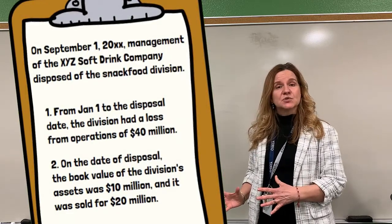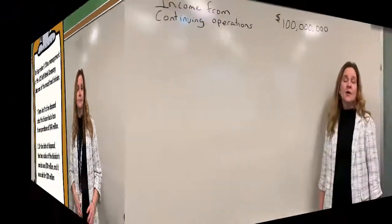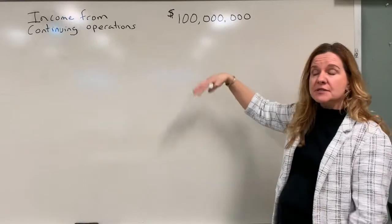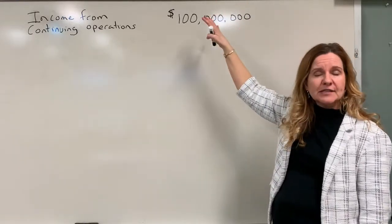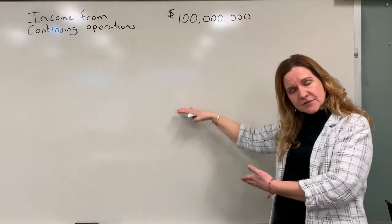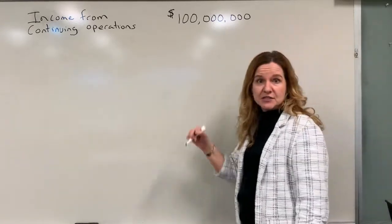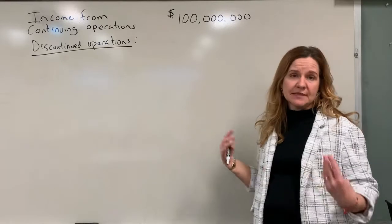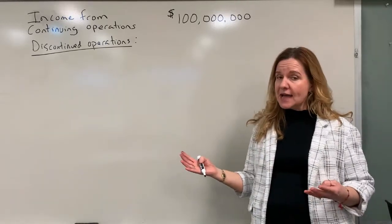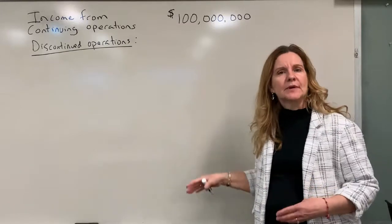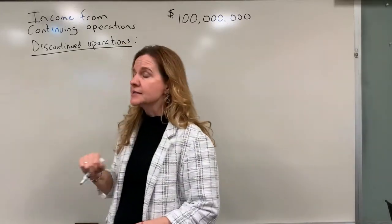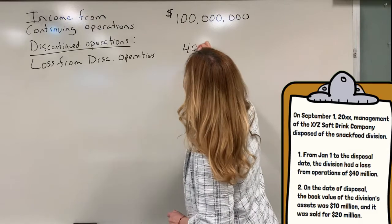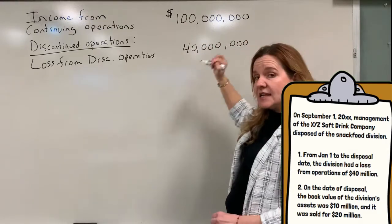Now let's look at the presentation of this situation on the income statement. We start with income from continuing operations — that's the top part with regular revenue and regular expenses. After that, I'm adding a header: discontinued operations. I'm going to separate the items out, which is allowed. The first part is the loss from discontinued operations, which was $40 million from the problem — shown in parentheses to indicate it's a loss.